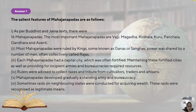The example of a Mahajanapada ruled by a king is Magadha. Each Mahajanapada had a capital city which was often fortified. Maintaining these fortified cities as well as providing for incipient armies and bureaucracies required resources. Rulers were advised to collect taxes and tribute from cultivators, traders and artisans. Collection of tax existed right from ancient times, as it was the responsibility of the king to provide social welfare and protect his subjects, and subjects paid taxes for those services.